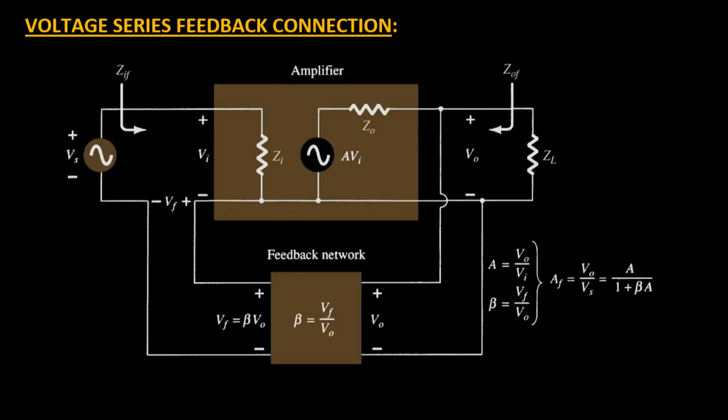As per the name indicates, the voltage term defines the connections on the output side. The output V0 is fed as input to the feedback amplifier, and the term series defines the connection on the input side. The Vf potential is in series with the input potential Vs.